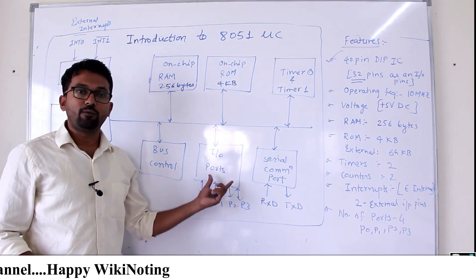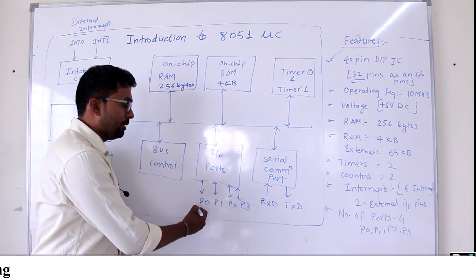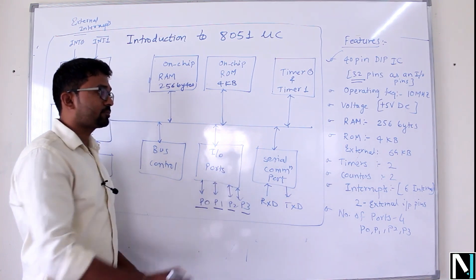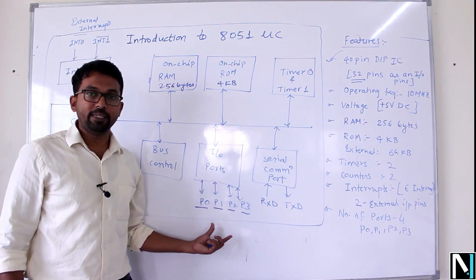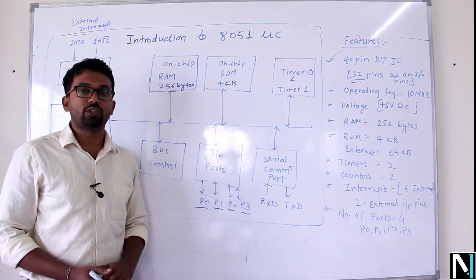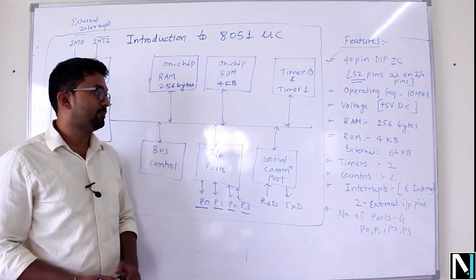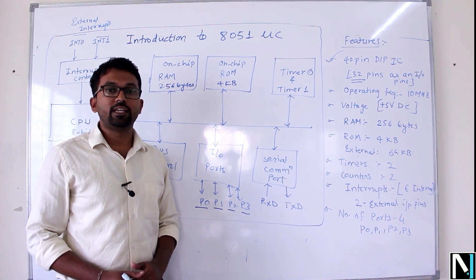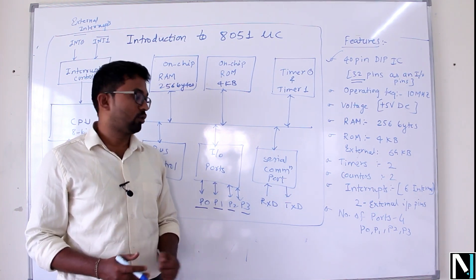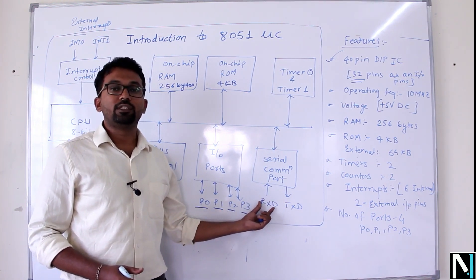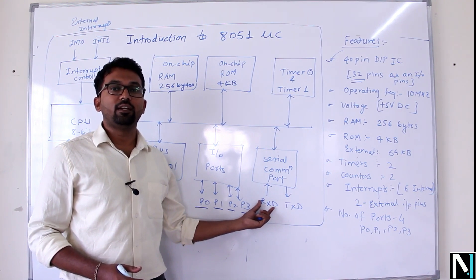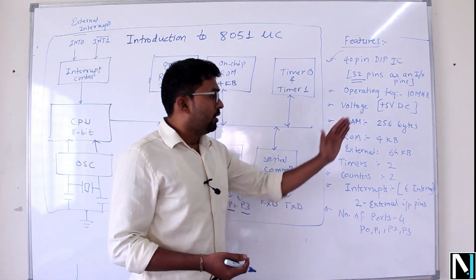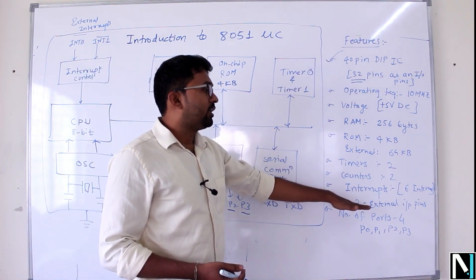It has four input-output ports labeled as P0, P1, P2, P3. Each port has 8 pins, so obviously it gives rise to 32 input-output pins. It has a serial communication port used for serial communication between PC and microcontroller. The pin used to receive data is RXD and to transmit data is TXD.